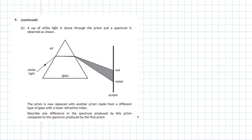Question 9, final part C: A ray of white light is shown through the prism and a spectrum is observed — white light passing from air into the glass prism produces a spectrum projected onto a screen. The prism is now replaced with another prism made from a different type of glass with a lower refractive index. Describe one difference in the spectrum produced by this prism compared to the spectrum produced by the first prism. To answer this, it's helpful to use the PHET Physics simulation site where you can actually play with the prism and white light.